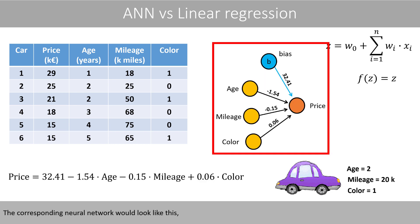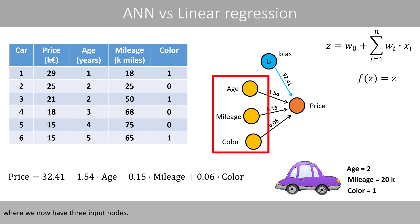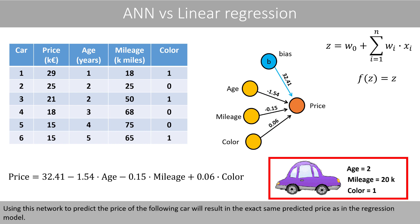The corresponding neural network will look something like this, where we now have three input nodes. Using this network to predict the price of the following car will result in the exact same predicted price as in the regression model.